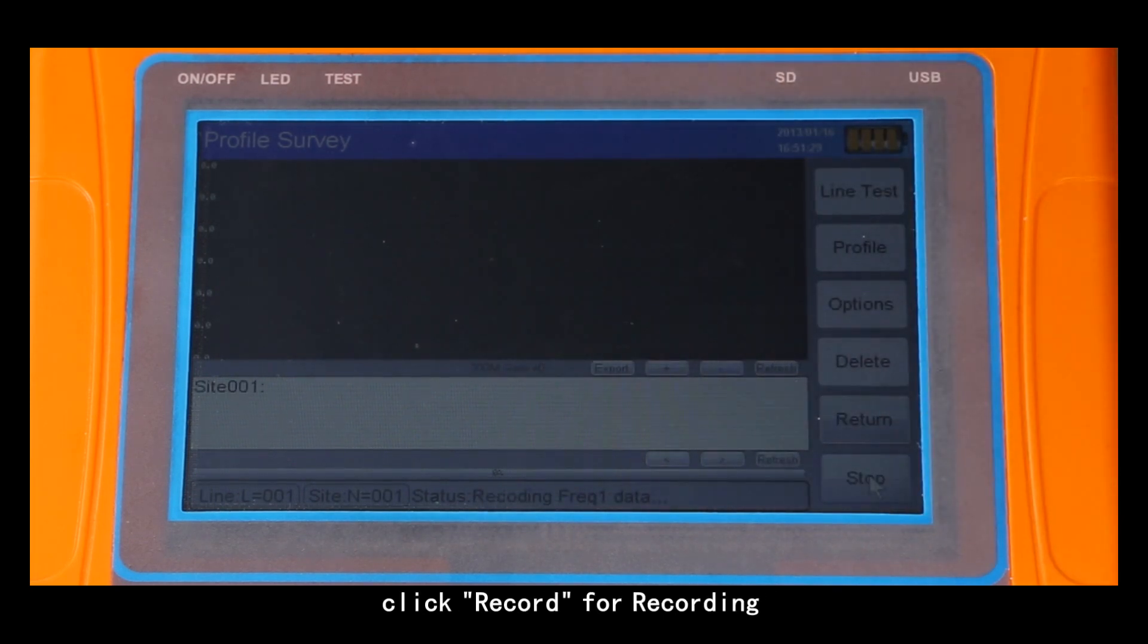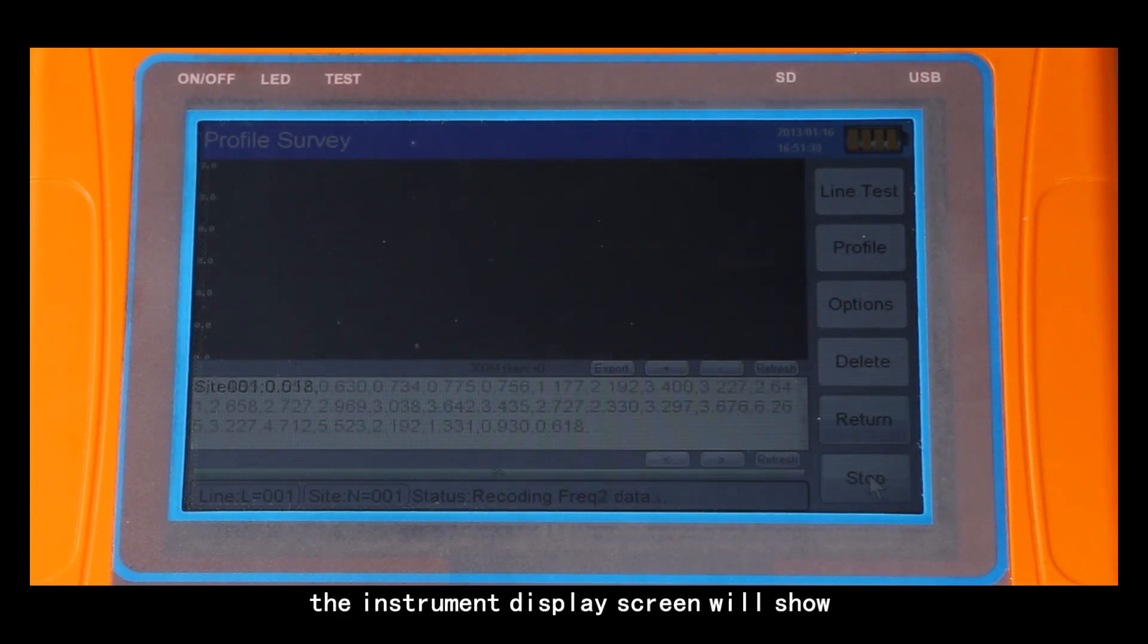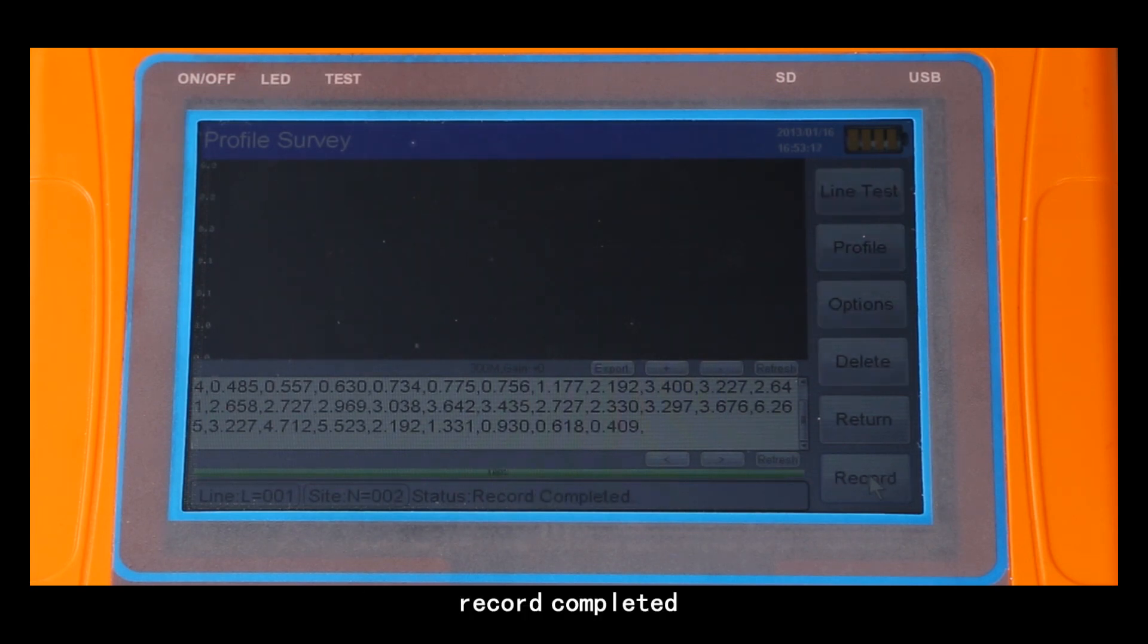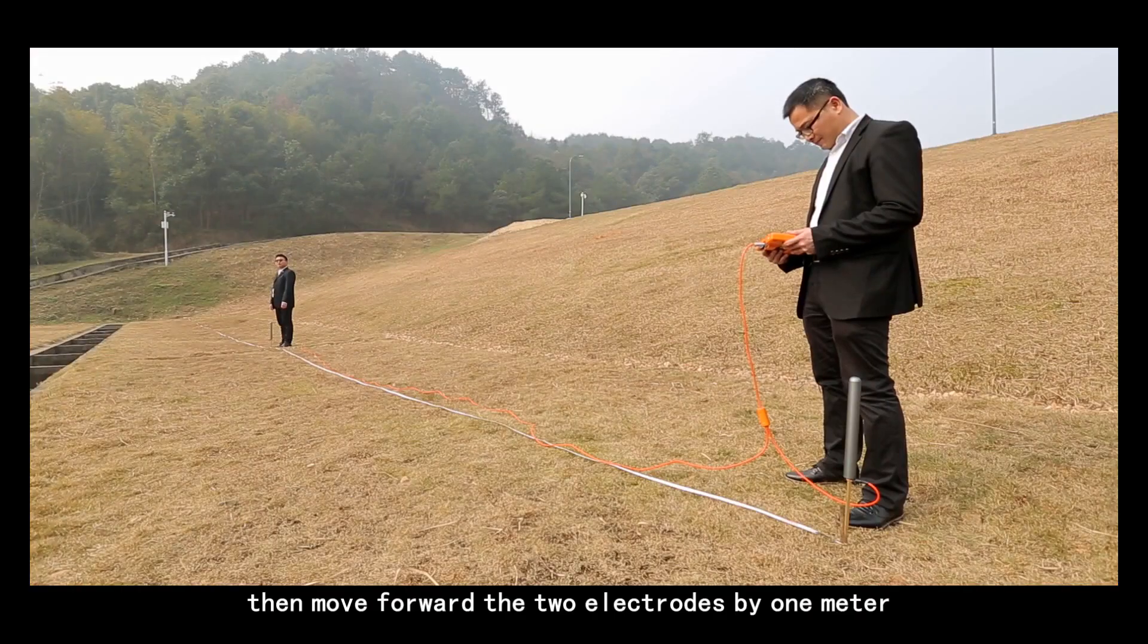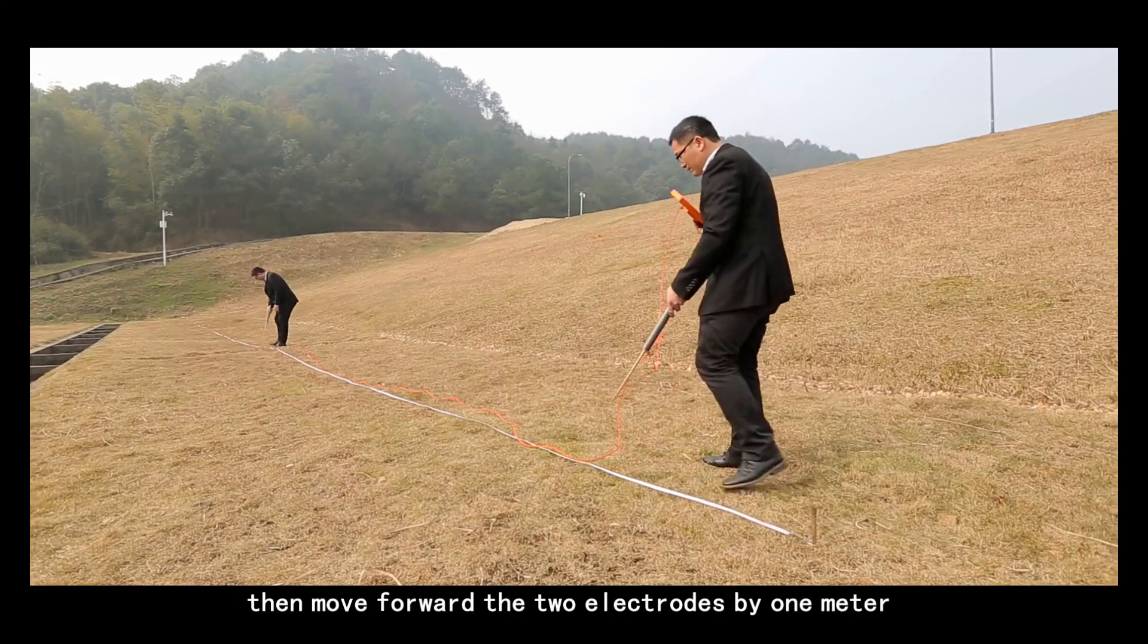Click record for recording. After data collection, the instrument display screen will show record completed with a reminder sound. Then move forward the two electrodes by one meter.